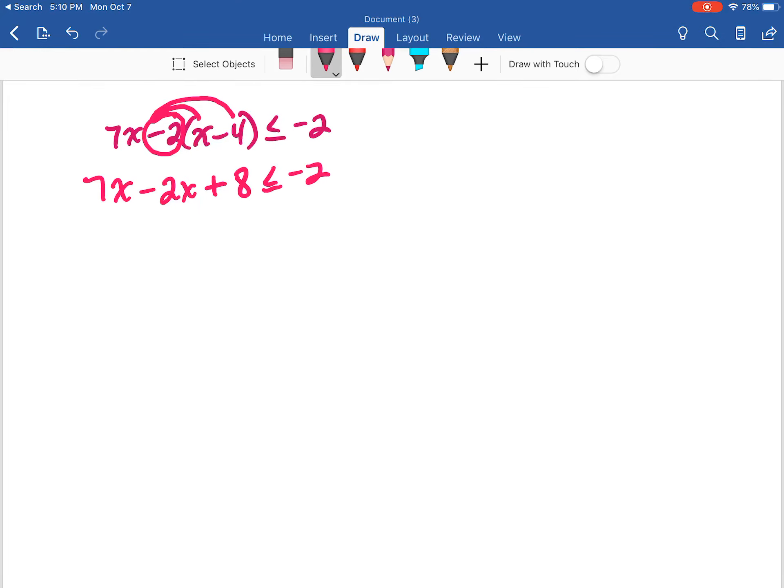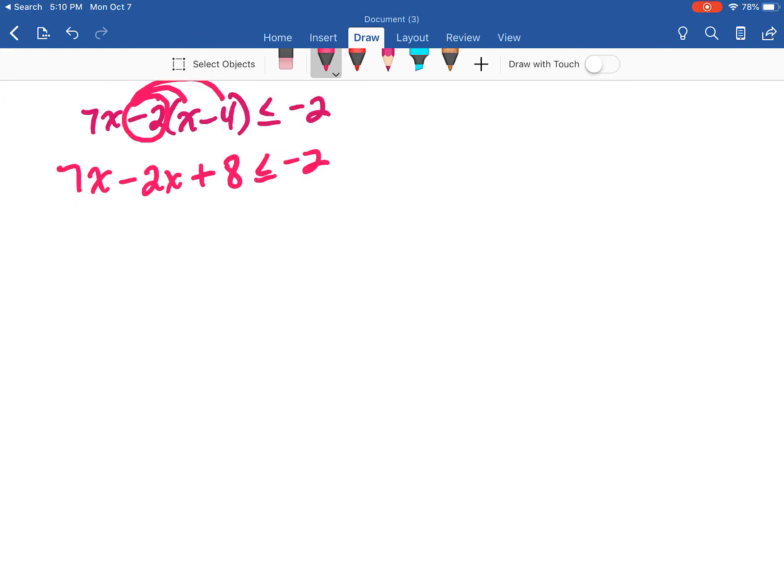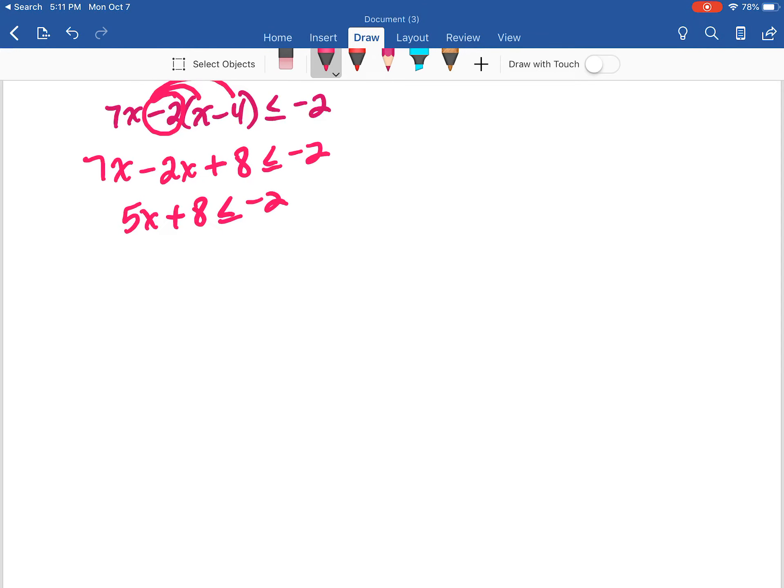Less than or equal to negative 2. Combine like terms, this becomes 5x plus 8 less than or equal to negative 2. I'm going to subtract 8 from both sides. That gives me 5x is less than or equal to negative 10. Divide by 5, that gives me x is less than or equal to negative 2.